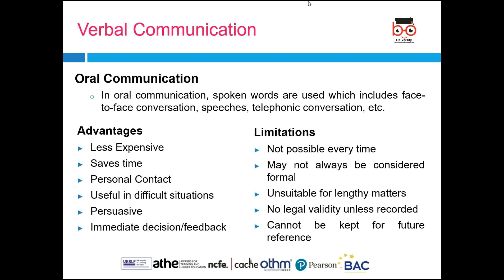There are two types of communication: verbal and non-verbal. In verbal communication, we have oral and written communication. Oral communication uses spoken words — face-to-face conversation, speeches, and telephonic conversation. For example, speaking directly to someone is oral communication, whereas sending a presentation is written communication. Oral communication has many advantages as well as limitations. First of all, it is considered to be less expensive.